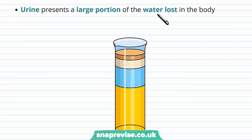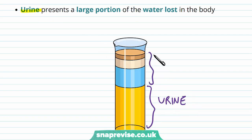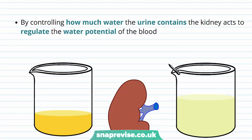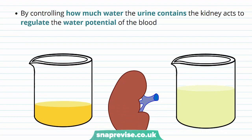Water is lost from the body through various ways. The main way is through urine, but the other methods include sweating — particularly if the environment is very warm — breathing in the form of water vapor, and feces. Water is continuously being lost, but we drink to maintain our water level. The kidney takes the blood, recognizes how much water we need in the body, and controls the amount of urine produced so that it can control the water potential of the blood.